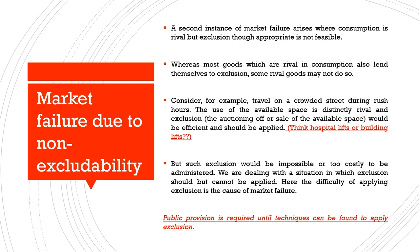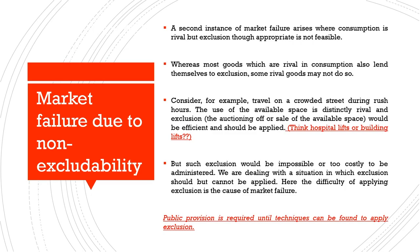When we are dealing with a situation in which exclusion should be applied but is not possible, we face market failure. Public provision is required until techniques can be found to apply exclusion. Market failure takes place when it becomes prohibitively costly to exclude people from utilizing a good, or because it is non-rival and therefore not feasible to exclude people. When markets are not able to efficiently provide these goods, we face market failure — due to non-rival nature, non-excludability, or both. The degree of these characteristics determines the size of the market failure.